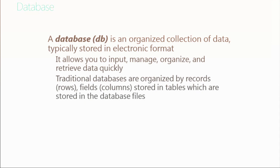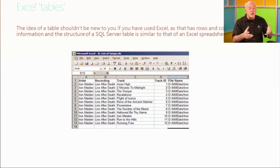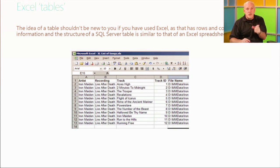A database allows us to manage, organize, and categorize content, and more importantly retrieve that content fairly quickly. Traditional databases store data in rows or records, and then we have columns, also called attributes or properties. You may be thinking that sounds a lot like an Excel spreadsheet, and it is very similar in the fact that we have rows and columns.